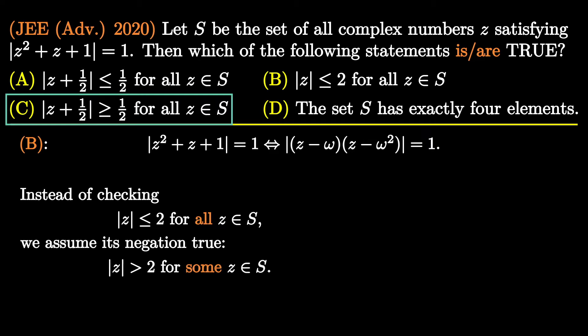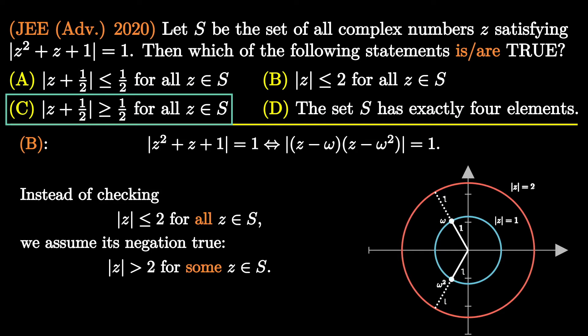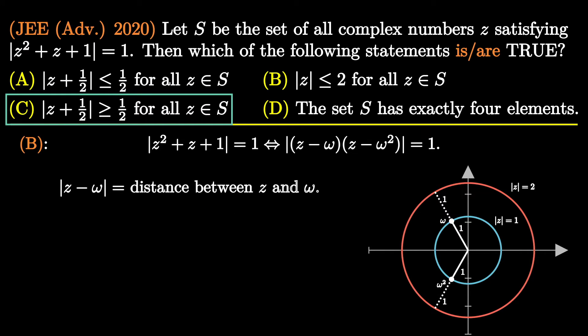The negation of option B is that there exists some z in S whose magnitude is greater than 2. Now let's see whether this statement leads to contradiction or not. It is well known that ω and ω² are two complex numbers which lie on the unit circle centered at the origin. We have a complex number z whose magnitude is greater than 2. In other words, that complex number lies outside the red circle, which is equivalent to |z - ω| > 1. And similarly, we get |z - ω²| > 1.